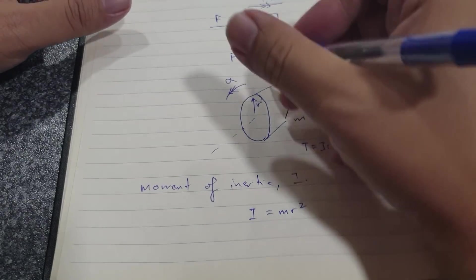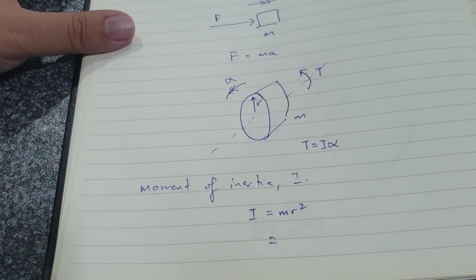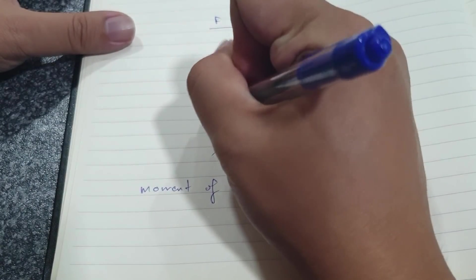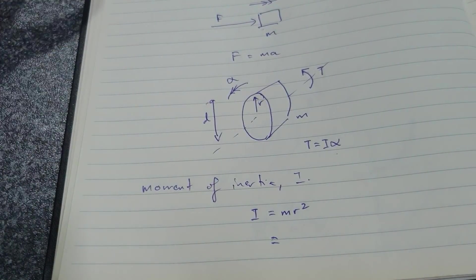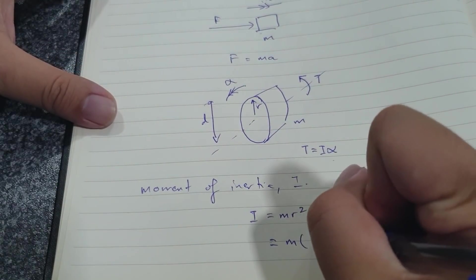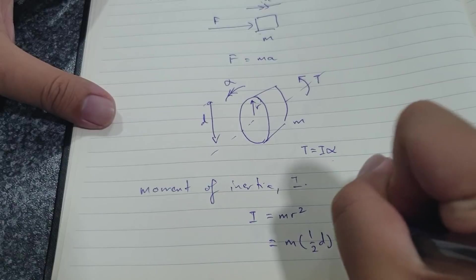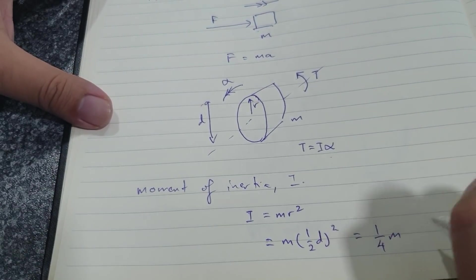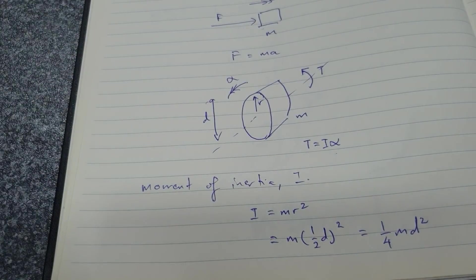Okay, so now of course r is half of your diameter. The diameter is 2r and therefore m times half of your diameter squared. Therefore you can also look at it as half m d squared. So this is the moment of inertia for a cylinder.